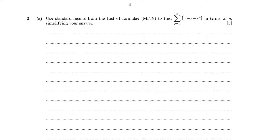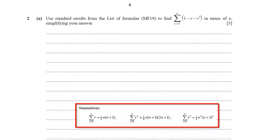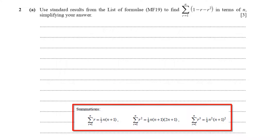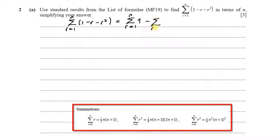We will need the list of formulae here — these are the standard results we are expected to use. The summation from r equals 1 to n of (1 minus r minus r squared) equals the summation of 1, minus the summation of r, minus the summation of r squared. So the summation is distributed across all three terms.